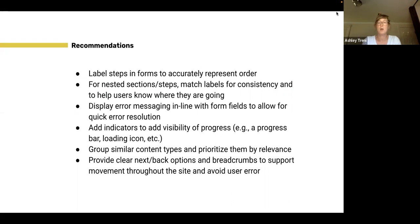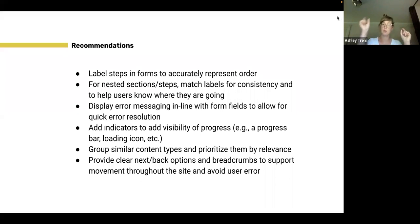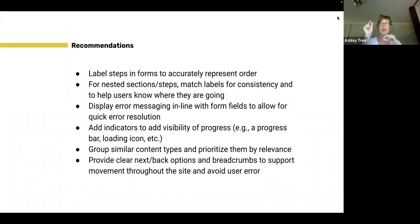A few more recommendations and best practices for building forms: Label the steps to accurately represent the order. To avoid having too many steps, think about nested sections and steps. It's very important to make sure you're matching labels for consistency — if you label a section, make sure that section is the same one that might appear in a sidebar navigation or a progress indicator. Users can use labels and section titles as ways to orient themselves and make sure they're on the right track — different types of cues that can really alleviate anxiety and stress.